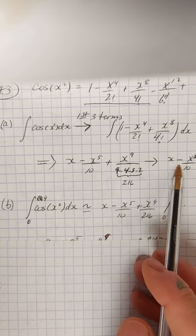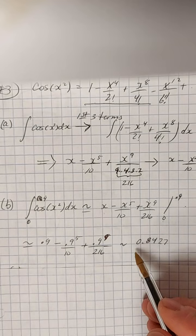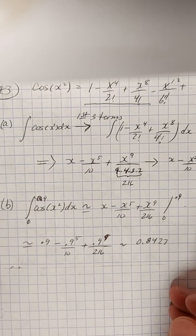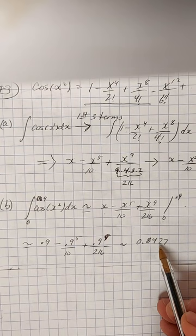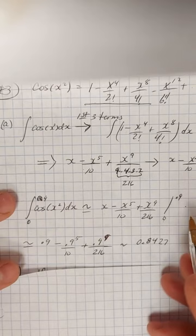Part B asks us to approximate the area under the curve using those results. Since we evaluated the integral in part A, we just apply the limits of integration. The lower limit contributes zero since each term has a factor of x. Plugging in 0.9 for each term and evaluating gives approximately 0.8427, rounded to four decimal places.